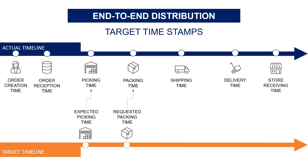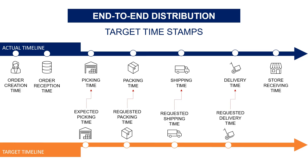Then you have the requested packing time — it's usually your invoicing team that wants to fix this, because when the shipment is packed it will be ready to be invoiced and loaded onto the truck. You also have the requested shipping time, which is when we are supposed to hand over responsibility to the transportation team and the truck is supposed to leave the warehouse. And at the end, the most important KPI: the requested delivery time, which measures your end-to-end performance — the date the logistics team is committed to deliver the shipment at the store.